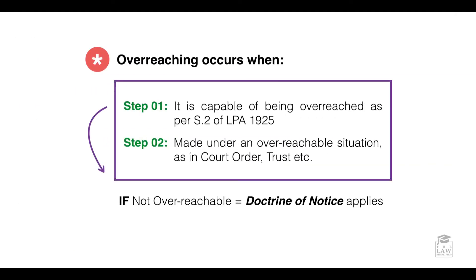We need to look at how exactly this concept of overreaching occurs. Overreaching is where an interest cannot be registered in the Land Charges Registry and is, in fact, an equitable right. Firstly, it must be capable of being overreached as per Section 2 of the Law of Property Act 1925. If so, step 2 applies: if it is made under an overreachable situation such as a court order or a trust, then it is applicable. If it is not overreachable, then the doctrine of notice will apply.